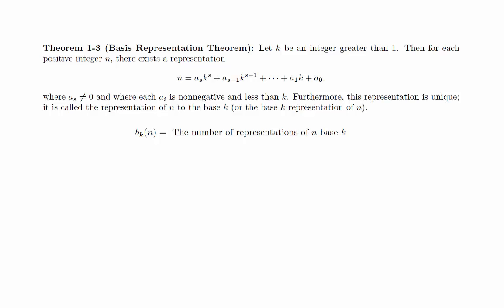Let b_k(n) denote the number of representations of n in base k. If we prove that this value is 1 for all n, then we would have proven the full theorem. To start, let's consider a representation of n as we've just described.